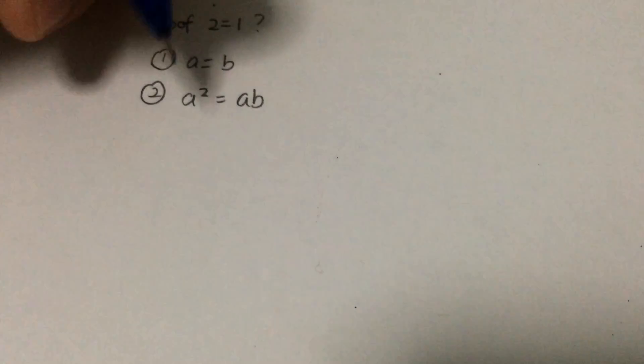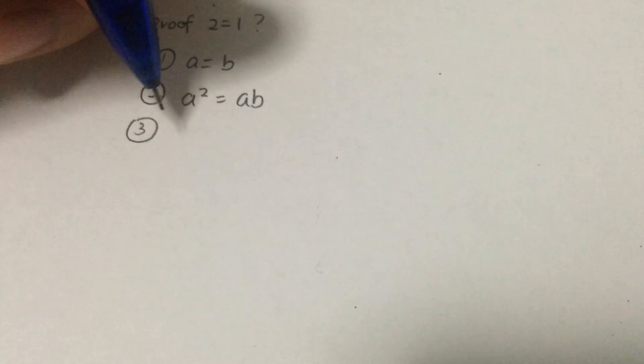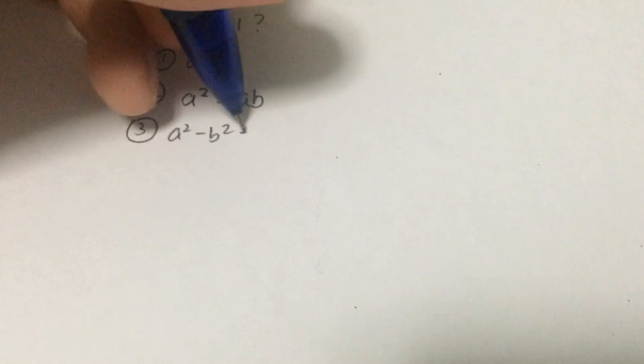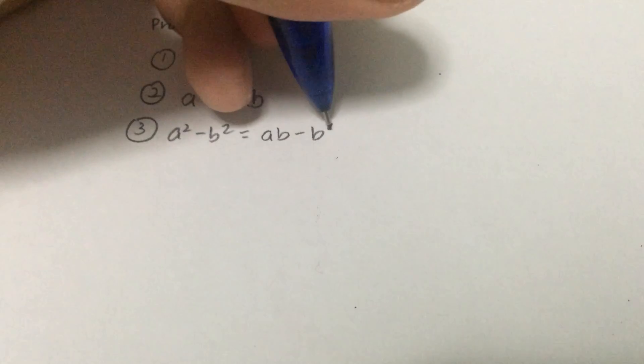And next thing, I will subtract b square to both sides. So I will get a square minus b square equals to ab minus b square.